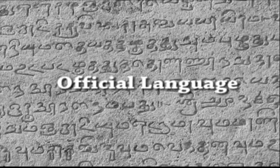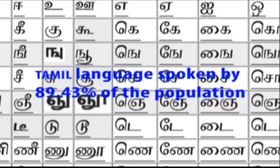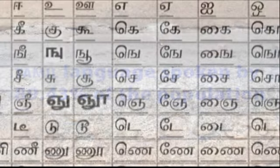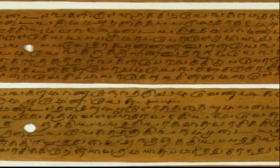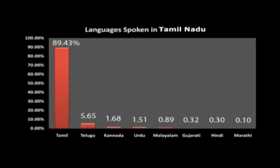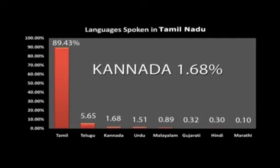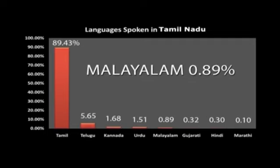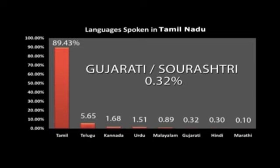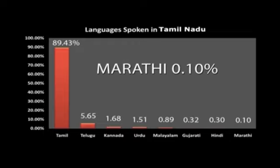Tamil is the official language and is spoken by 89.43% of the population. It has been in use in inscriptions and literature for over 2,000 years. The other Indian languages spoken in this state include Telugu 5.65%, Kannada 1.68%, Urdu 1.51%, Malayalam 0.89%, Gujarati-Saurashtri 0.32%, Hindi 0.30%, and Marathi 0.10%.